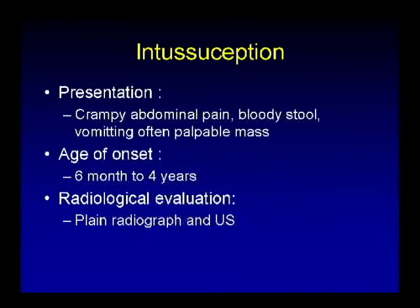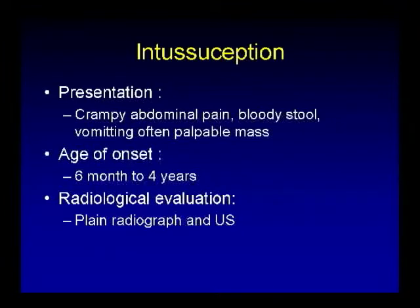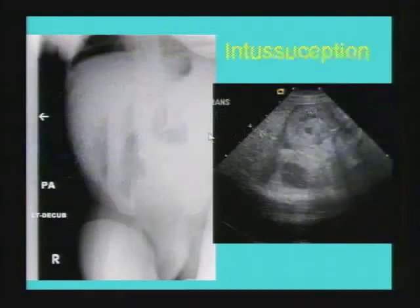Another condition is intussusception, a very common condition presenting with crampy abdominal pain, and in classical cases with bloody stool and often a palpable mass. Age of presentation is six months to four years. Presentation outside this age group always has a lead point as a cause. In this age group it is usually idiopathic. Evaluation is with plain films followed by ultrasound, though you may not always encounter the classic crescent sign.